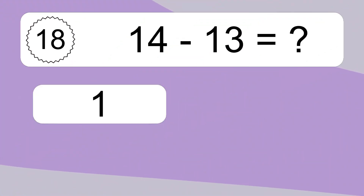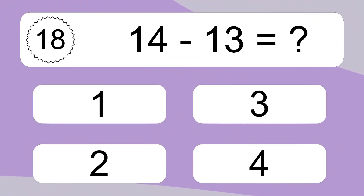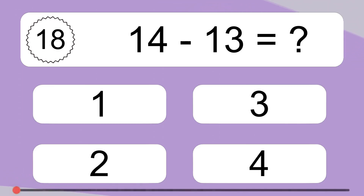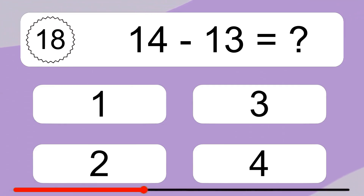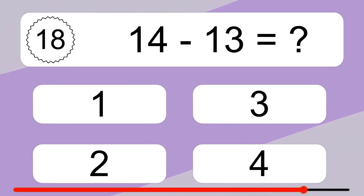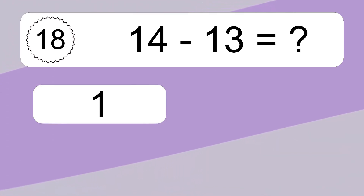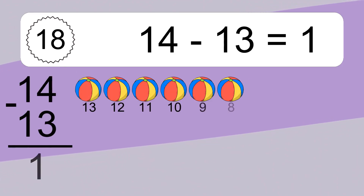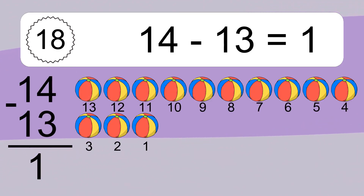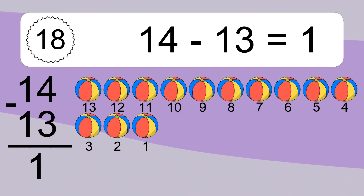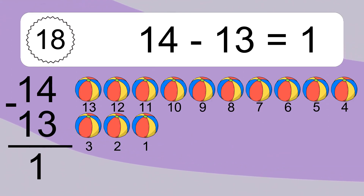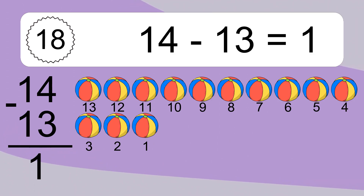14 minus 13 equals what? 14 minus 13 equals 1. Let's count it. 13, 12, 11, 10, 9, 8, 7, 6, 5, 4, 3, 2, 1.